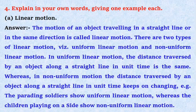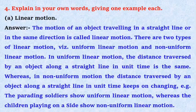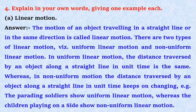The motion of an object traveling in a straight line or in the same direction is called linear motion. There are two types of linear motion: uniform linear motion and non-uniform linear motion.